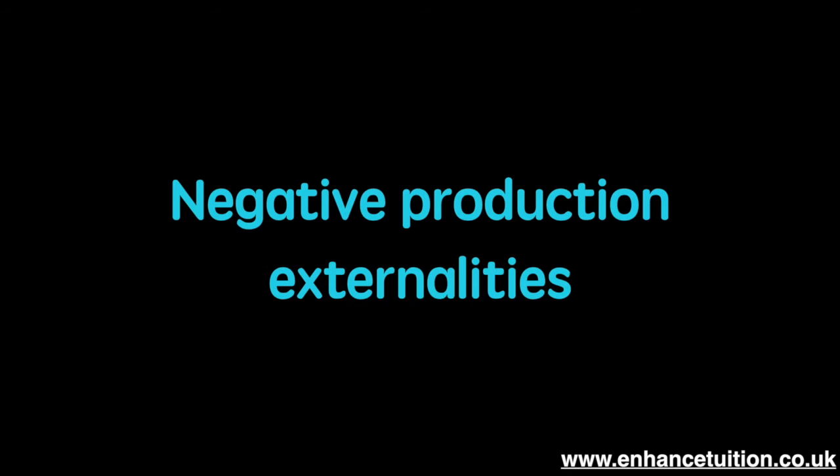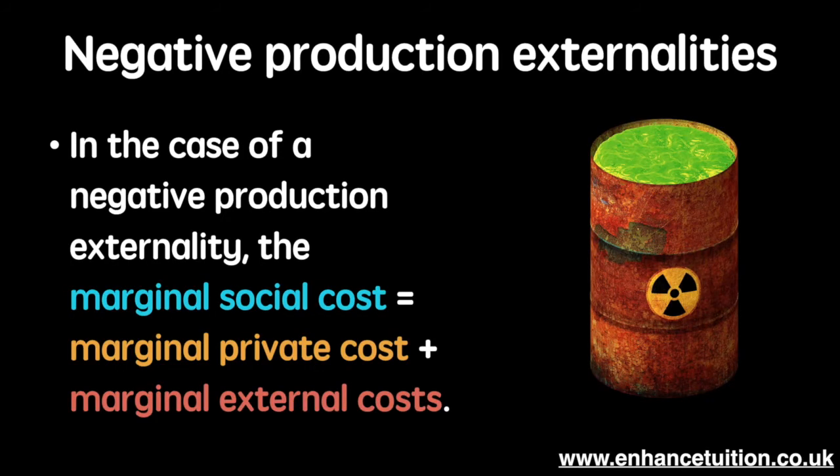Having an understanding of negative consumption externalities should help us understand negative production externalities. In the case of a negative production externality, the social cost of production is equal to the marginal private cost plus the marginal external costs. The supply curve shifts by the amount of the external cost.